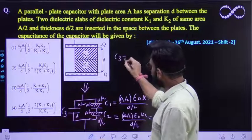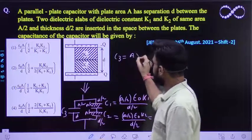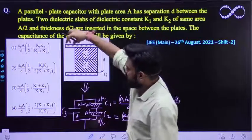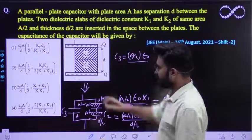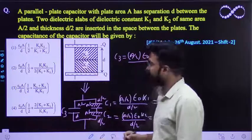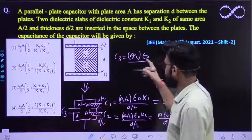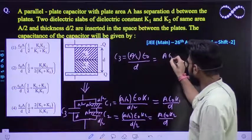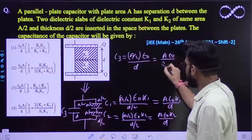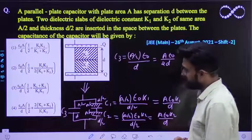C3 kitna hooga? Area iska bhi half hai, epsilon naught by D. Kyun ki isma dielectric constant nahi hai, to isma a dielectric constant nahi lenge. So a epsilon naught by D, aur D kitna hai? Separation D. This is it. So it would be equal to a epsilon naught by 2D. Ye aaga aapka C3 capacitance.